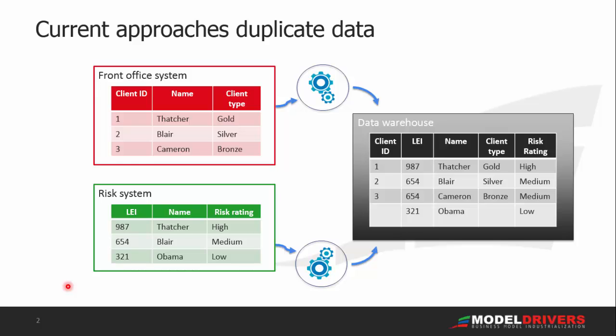Therefore, for reports and analytics requiring data from multiple sources, we need to copy and duplicate the data into one place. Not only that, the data has to be made congruent. In Asia, trade date is the day the trade was entered into the system; in Europe, the trade date is the execution date. So we end up with complex transformation processes as the data is moved from one place to another.